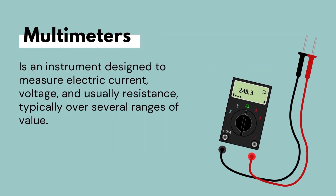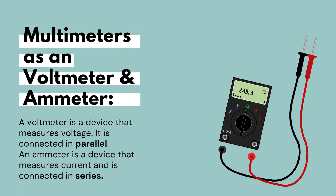A multimeter is an instrument designed to measure electric current, voltage, and usually resistance. It can be used as an ohmmeter that measures resistance, an ammeter that measures current, and a voltmeter that measures voltage. Voltmeters can measure voltage when connected in parallel, and an ammeter is a device that measures current when connected in series.